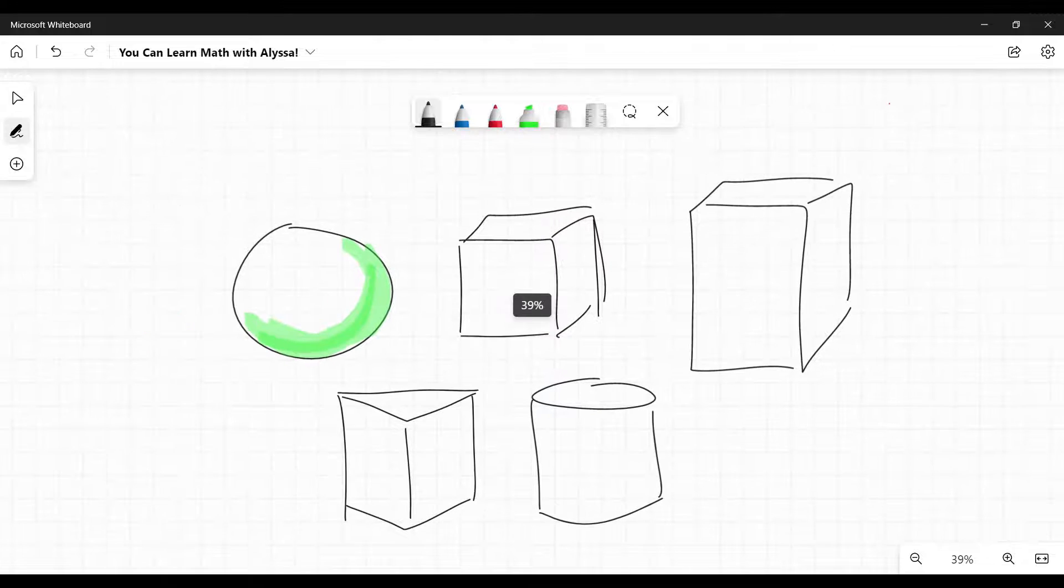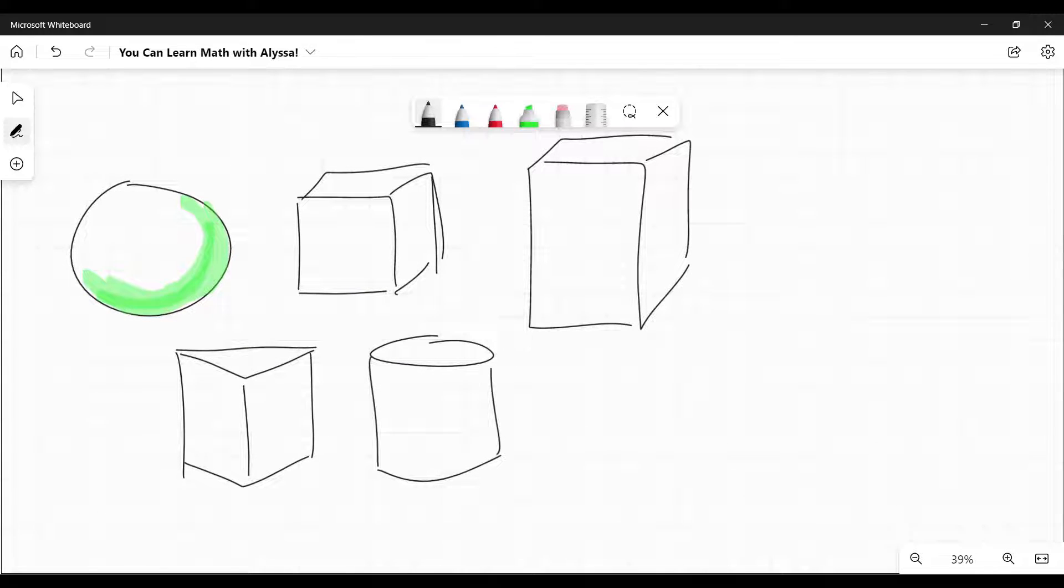And we're also talking about pyramids, and pyramids can have many different bases. So any pyramid, be that a square base, triangular base, what have you, and cones. So those are the basic shapes we're covering as far as volume.